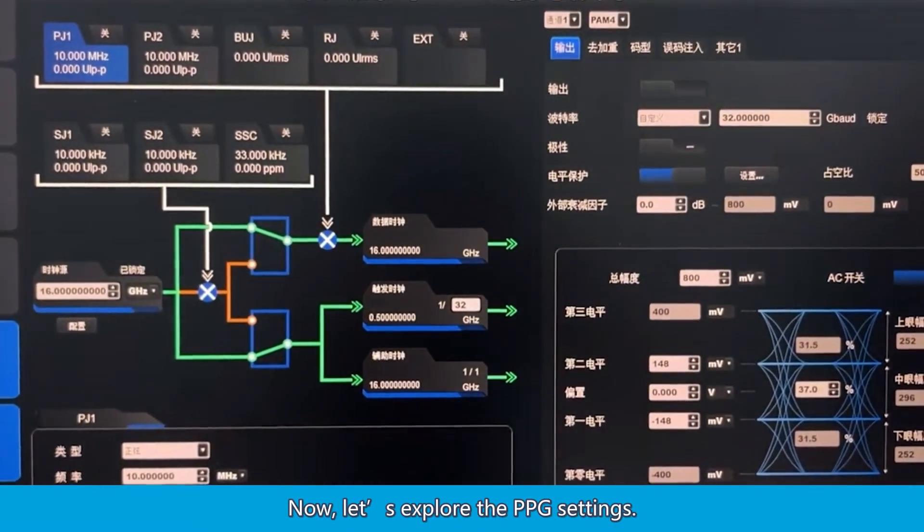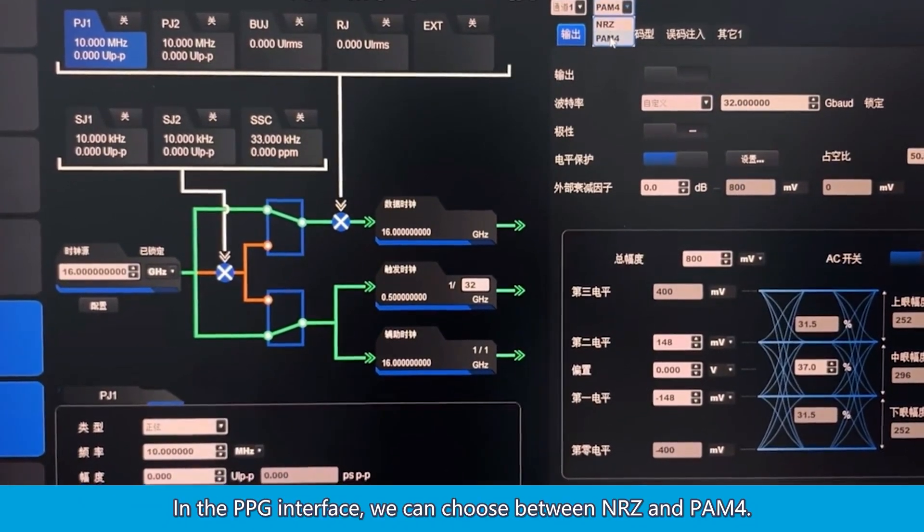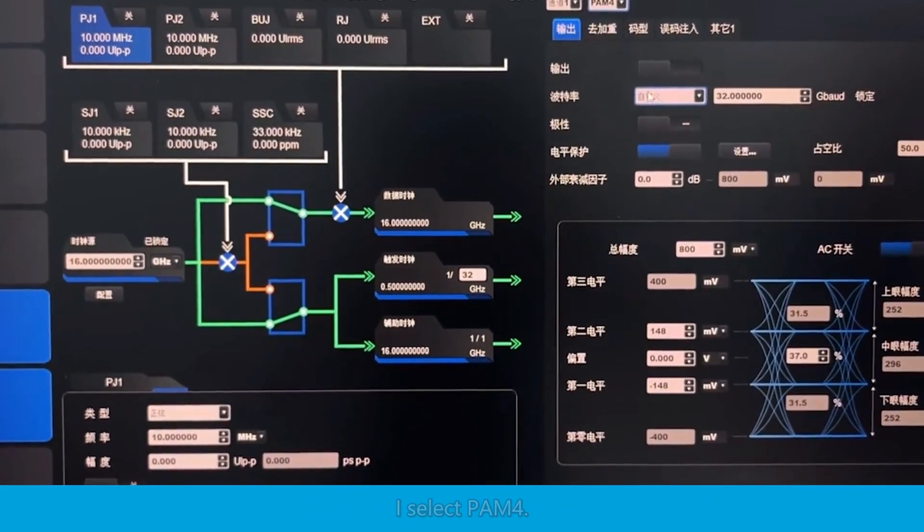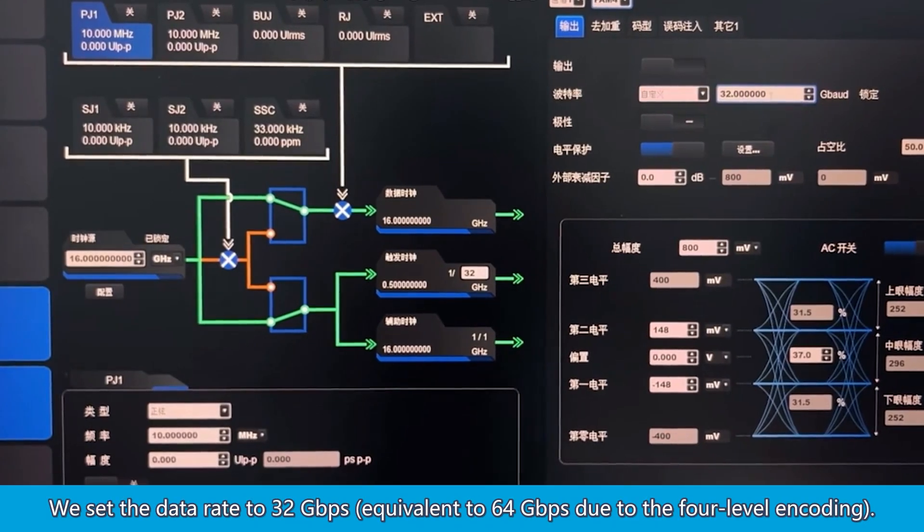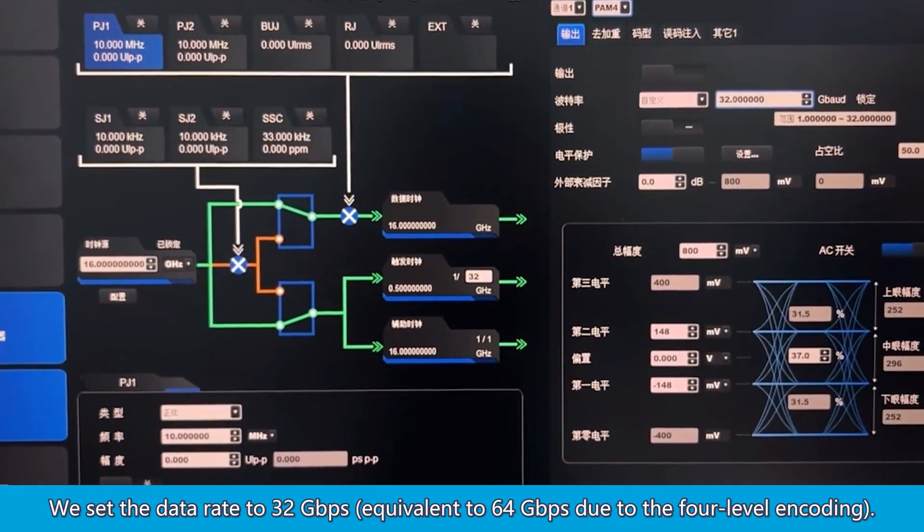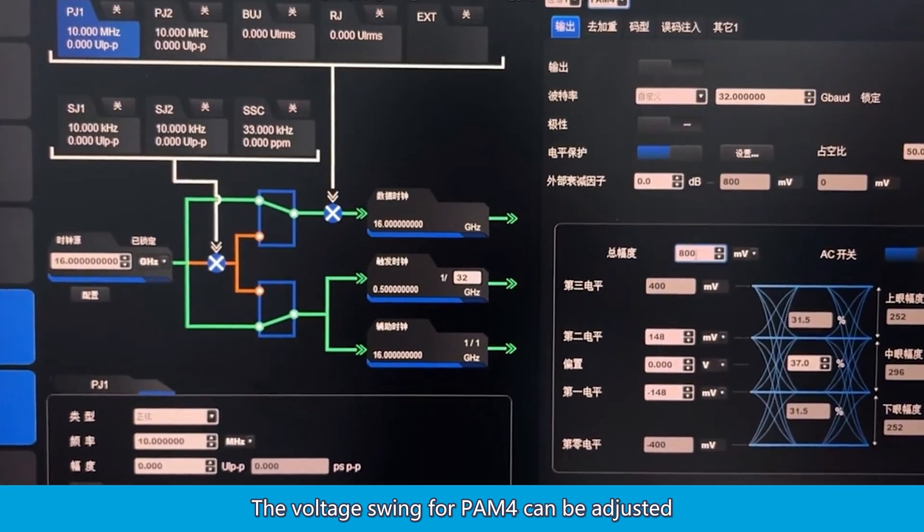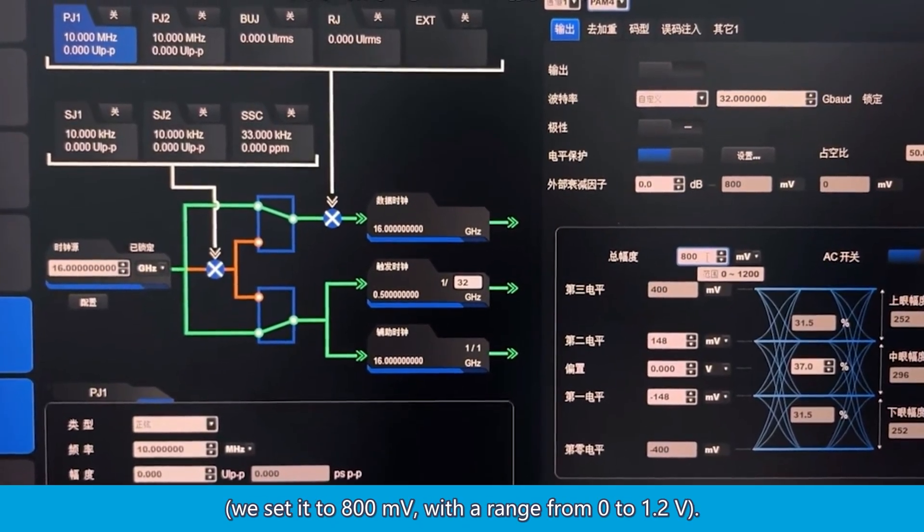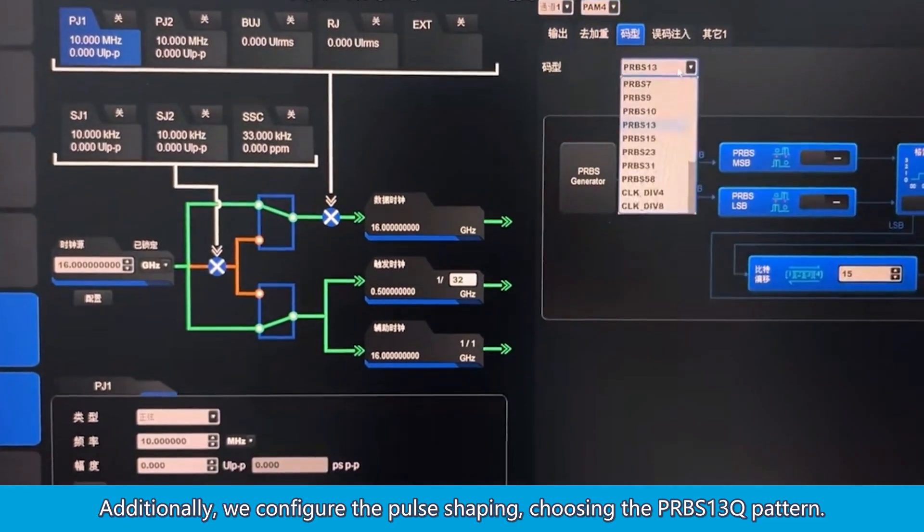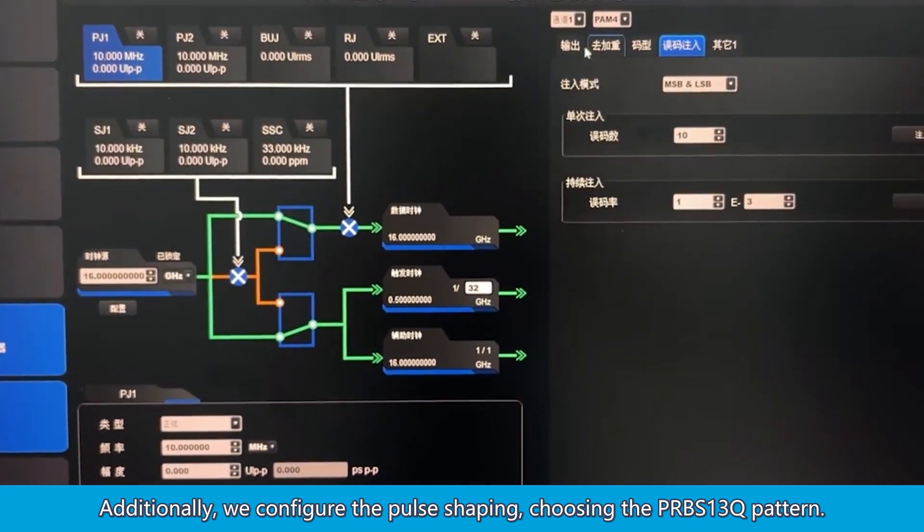Now, let's explore the PPG settings. In the PPG interface, we can choose between NRZ and PAM-4. Since we're generating PAM-4, I select PAM-4. We set the data rate to 32 gigabits per second, equivalent to 64 gigabits per second due to the four-level encoding. The voltage swing for PAM-4 can be adjusted. We set it to 800 MV with a range from 0 to 1.2 V. Additionally, we configure the pulse shaping, choosing the PRBS-13Q pattern.